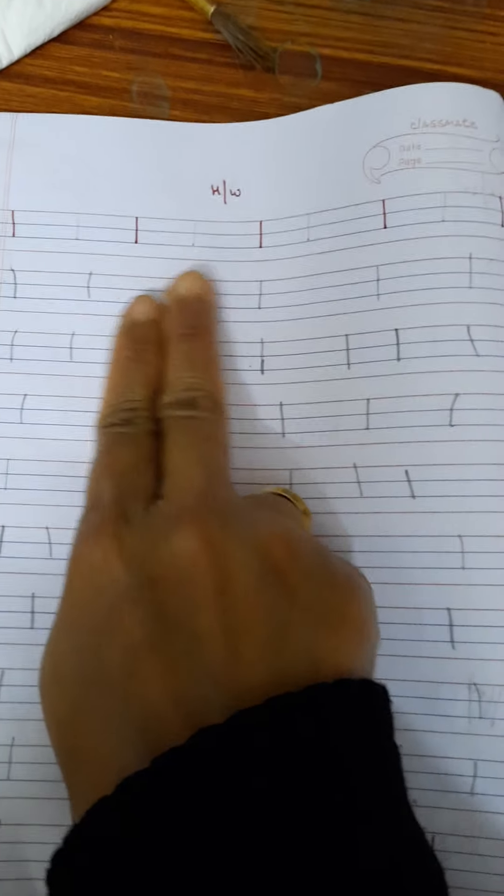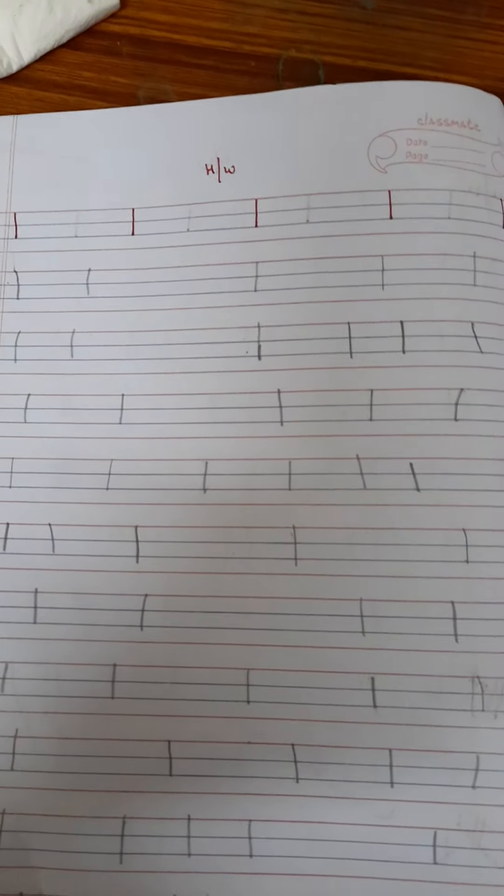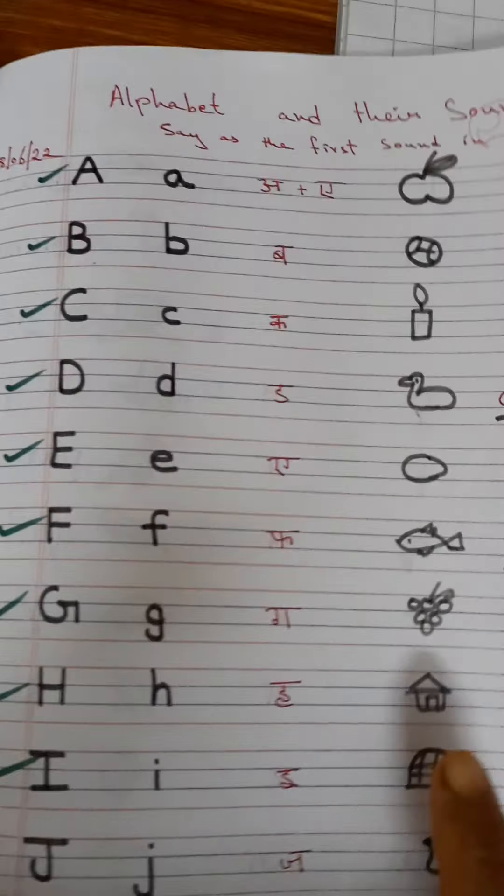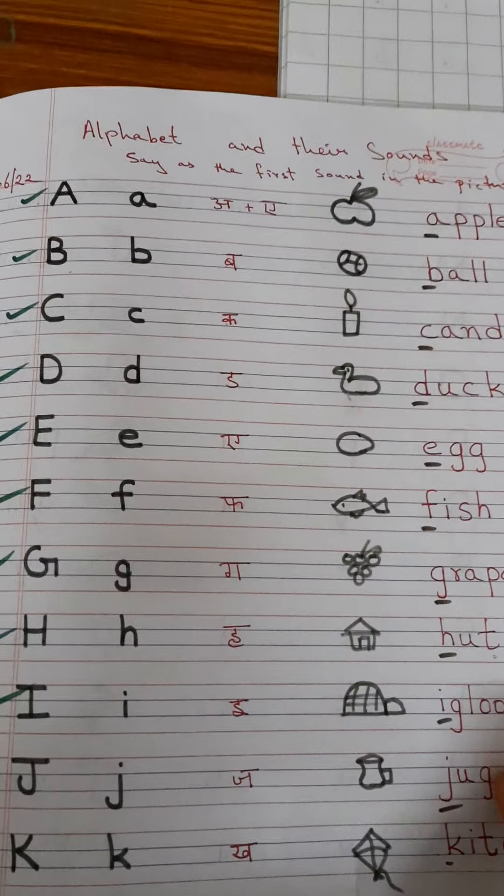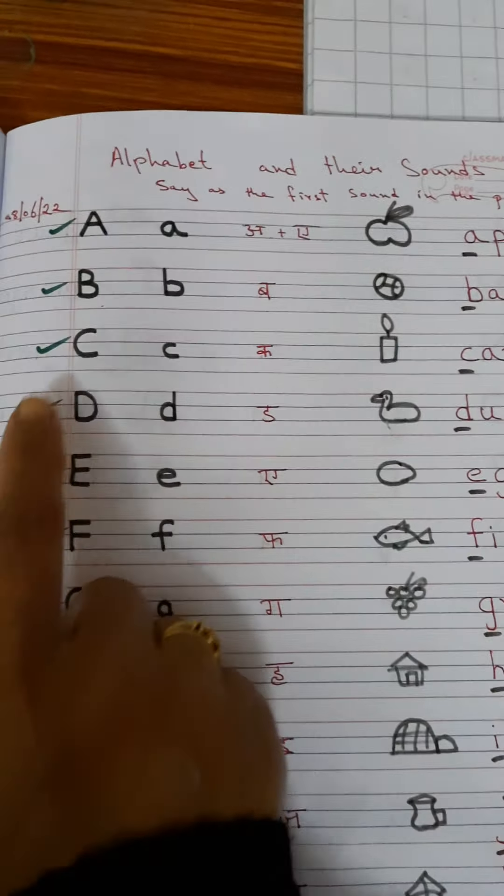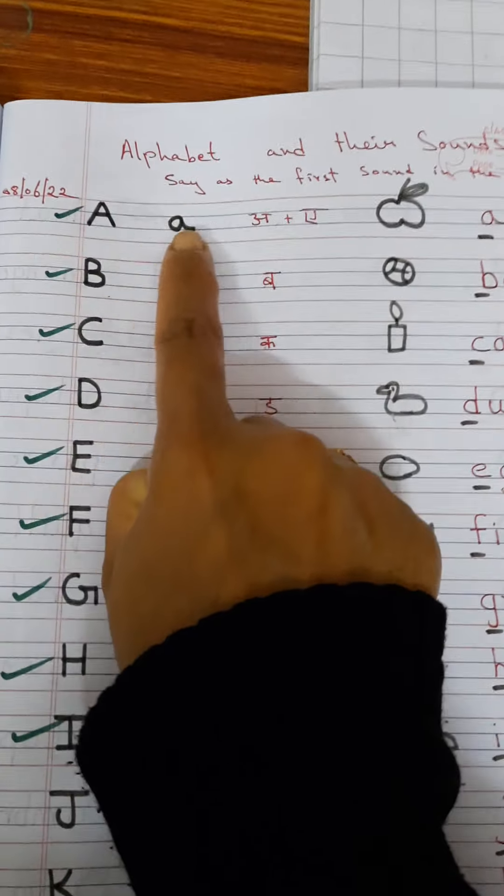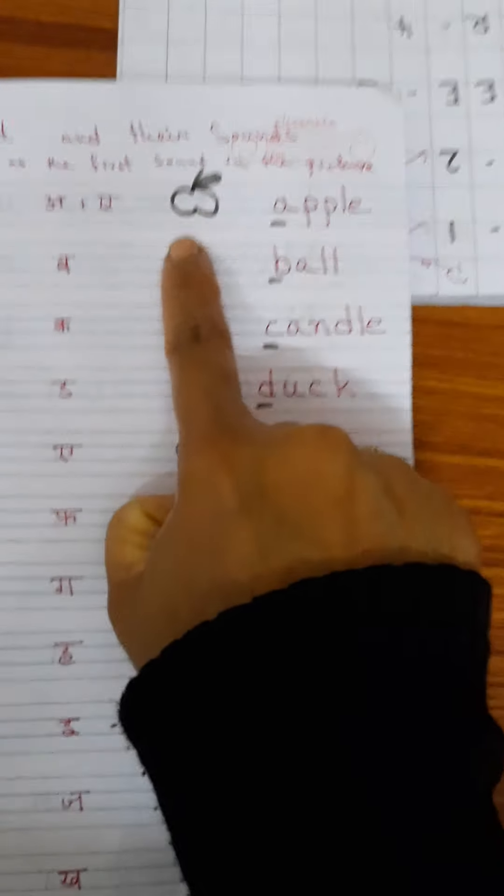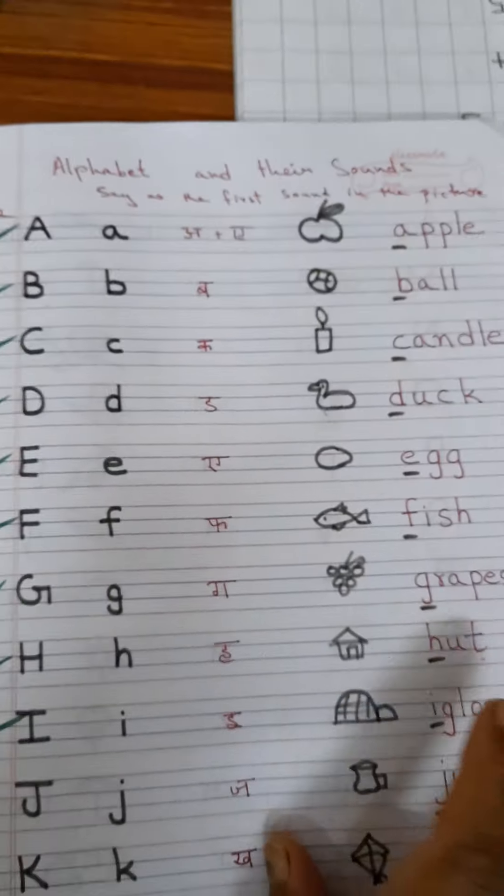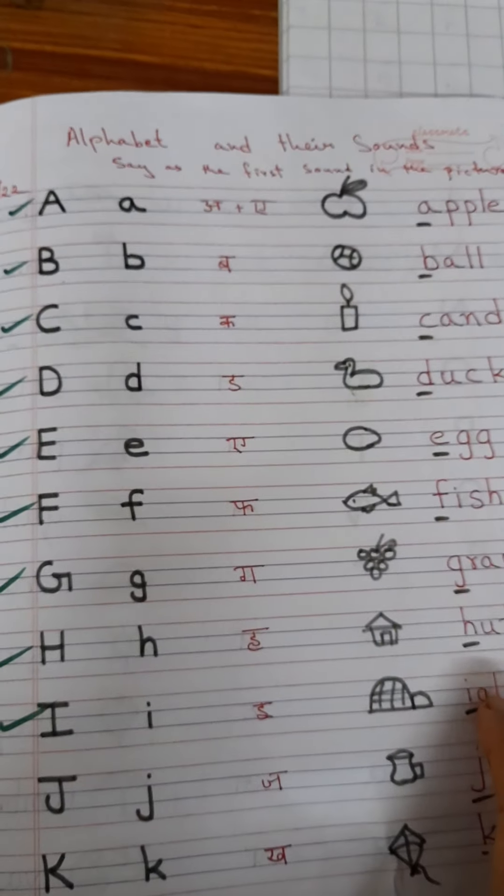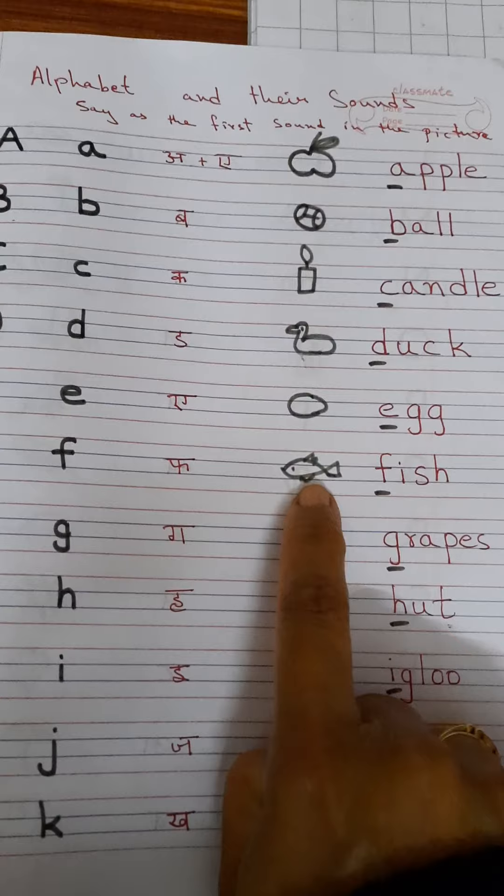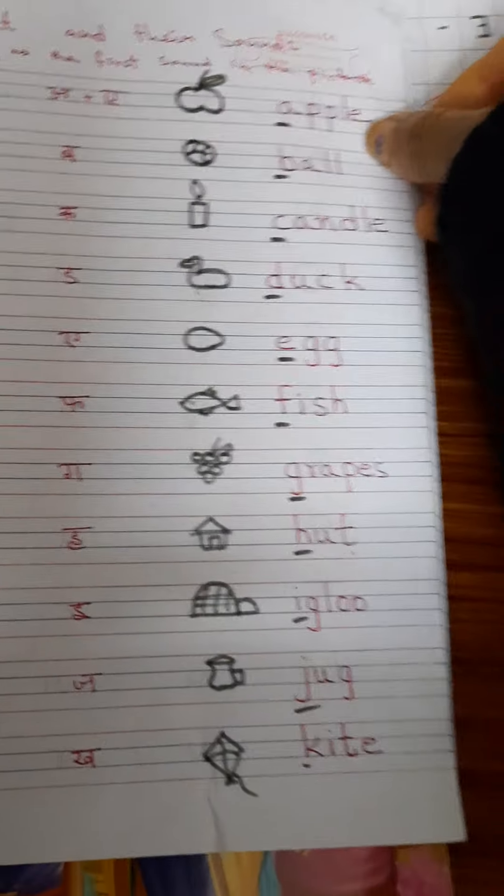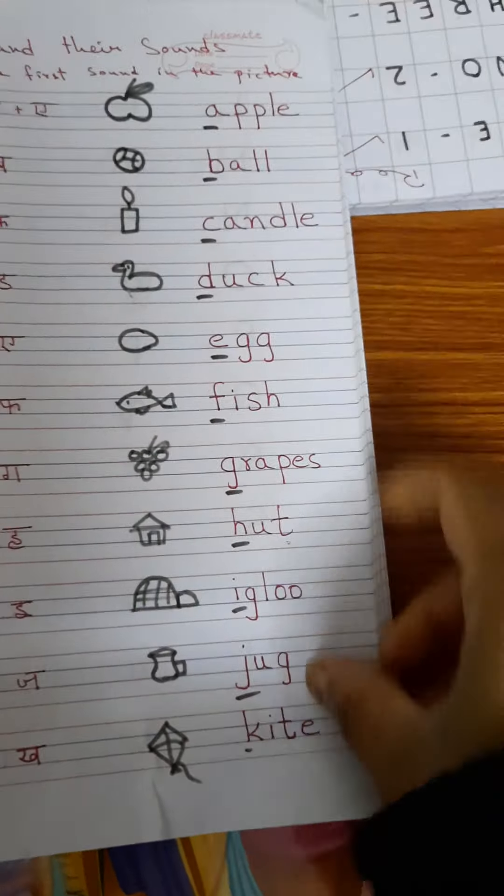This is the phonic sound alphabet, and the phonic sound. So the child will recognize capital A, small a, and the first sound of the picture. I have put the pictures here so that the child can say the first sound of the picture easily, because the child still doesn't know the spelling of the word. So this is an easy trick for the child to teach phonics.